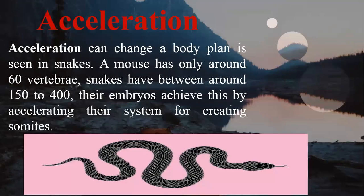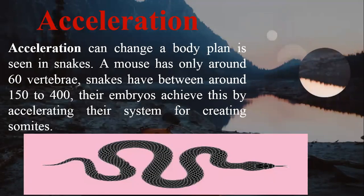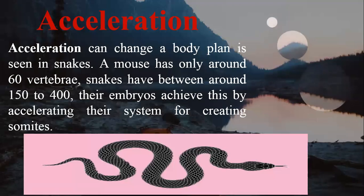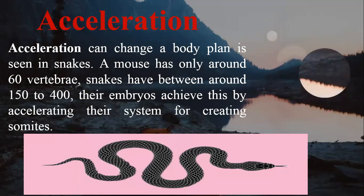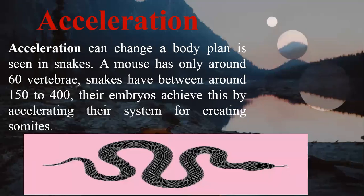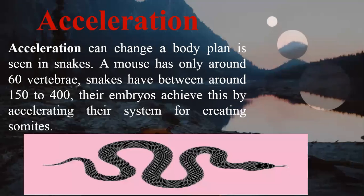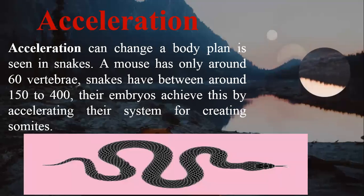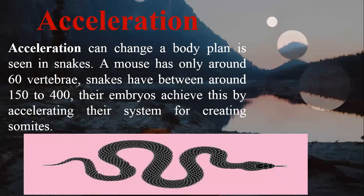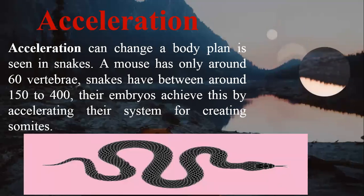Acceleration is a change in the body's developmental rate — an increase in embryonic stages. For example, mammals differ in their number of vertebrae overall, while snakes may have 150 to 400 vertebrae depending on the type. Snake embryos achieve this by accelerating their somite and muscle development system, creating additional vertebrae by accelerating that process.